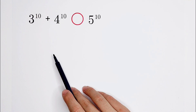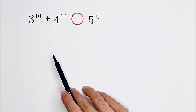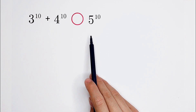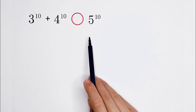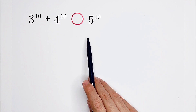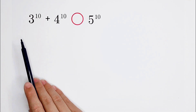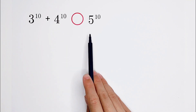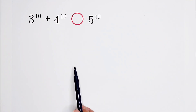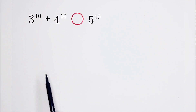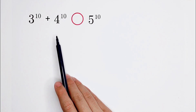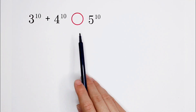I have a question: are there any other relationships among 3, 4, and 5? Of course there are — the Pythagorean theorem! 3 squared plus 4 squared is equal to 5 squared.